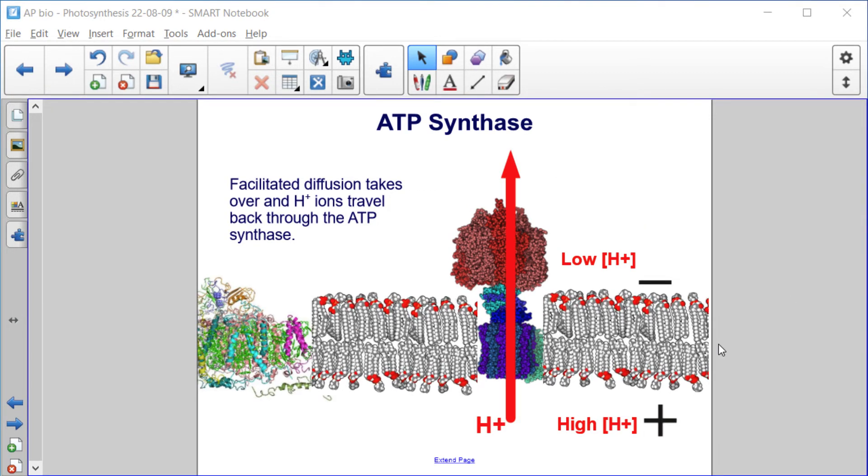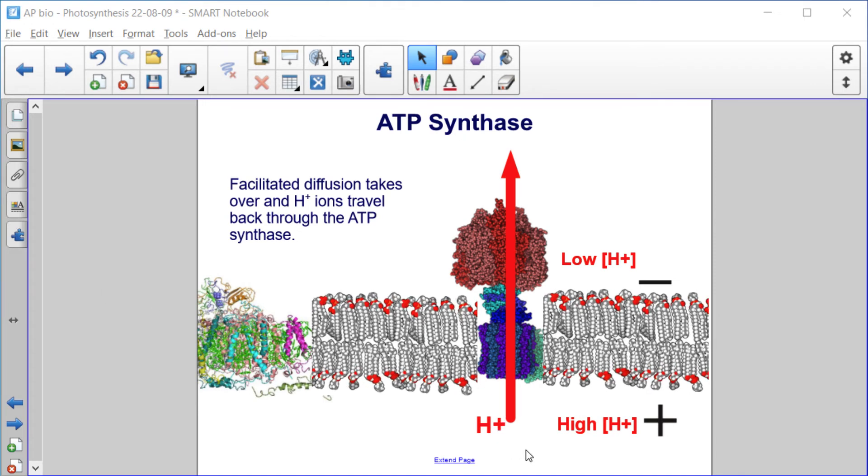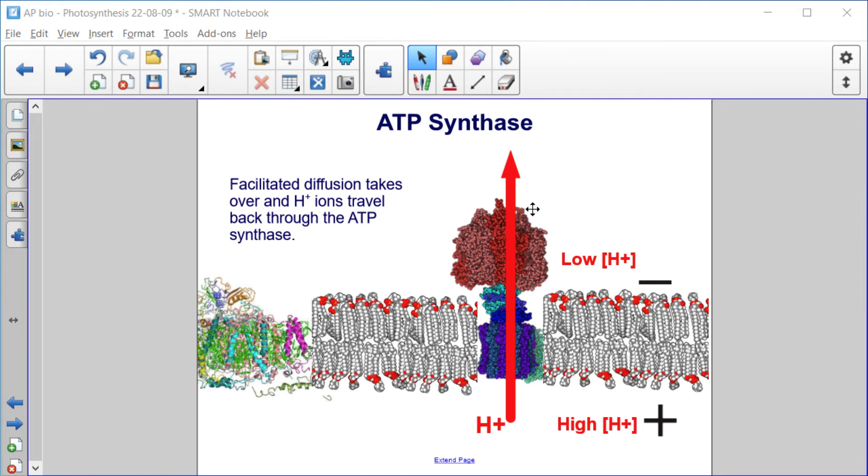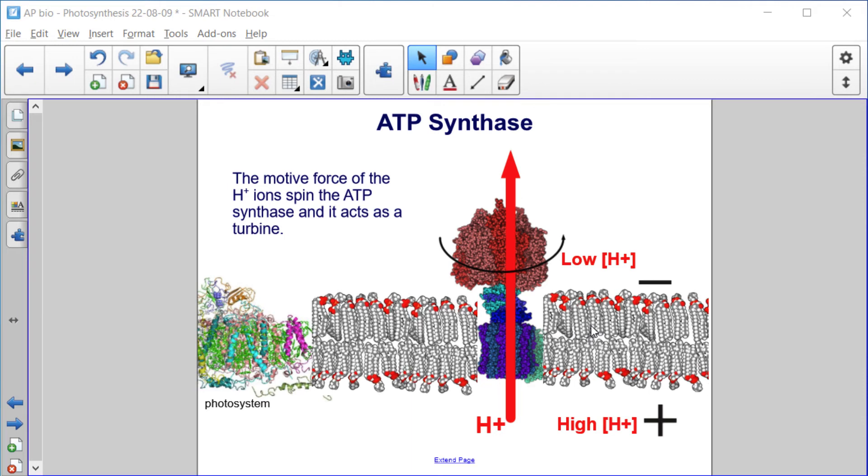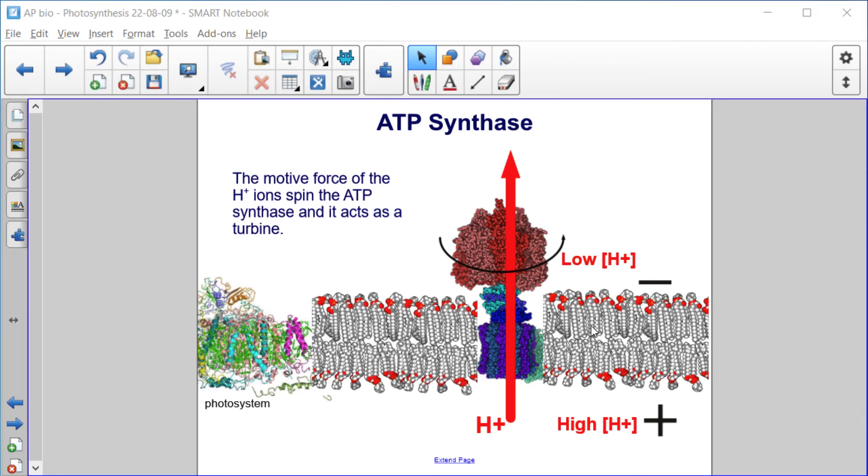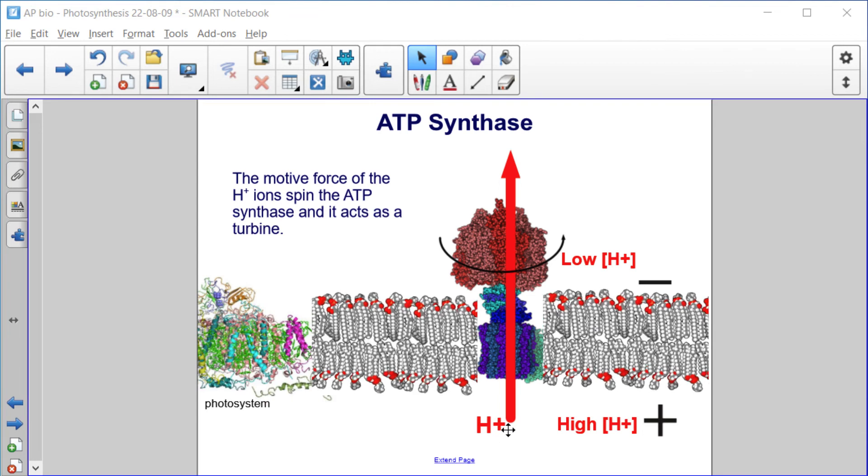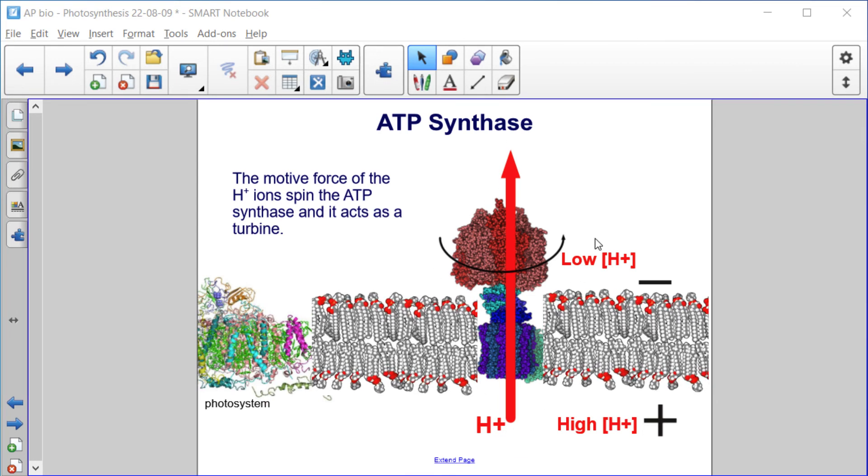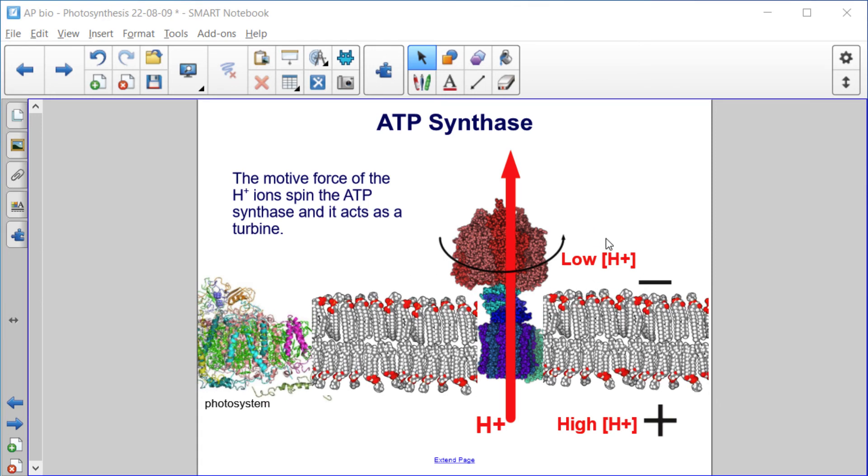Facilitated diffusion takes over at this point, and hydrogen ions travel back through the ATP synthase. The motive force of the hydrogen ions spin the ATP synthase, and it acts as a turbine. So the movement of these hydrogen ions provides this motive force which causes this ATP synthase to spin, acting as a turbine.